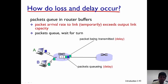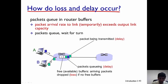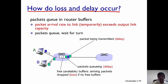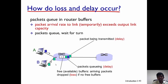This buffer has a capacity of 5, so there are three additional free places where packets can be queued. But if the packet arrival rate exceeds the output capacity by a large extent, the router buffer is going to quickly fill up and the remaining packets are going to be dropped. When these packets get dropped, they contribute to losses of packets in the network.